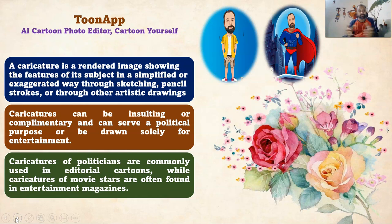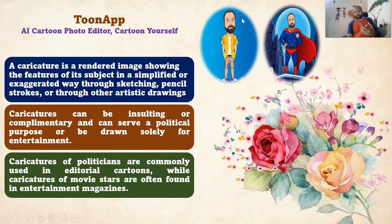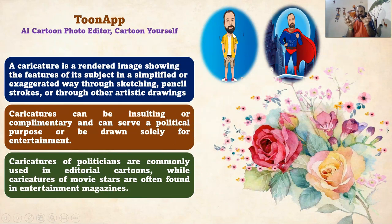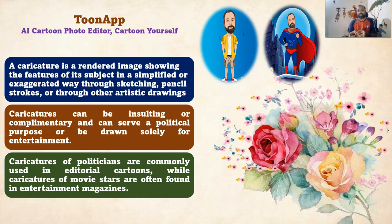A caricature is a rendered image showing the features of its subject in a simplified or exaggerated way through sketching, pencils, strokes, or other artistic tools. In this particular image — this is my face — once I take a selfie through my mobile phone, the Tune app automatically converts it into a cartoon. That cartoon face is then converted using AI, and I added a body to my head. By merging my head with the body together, the final output comes as a single image. This kind of technology is called caricature.